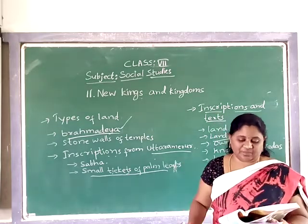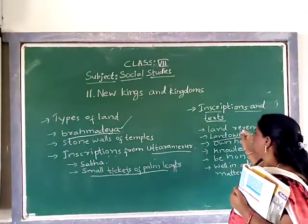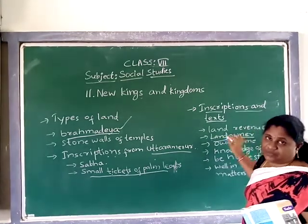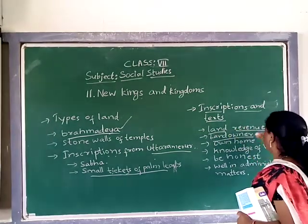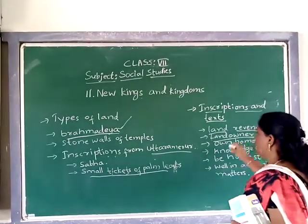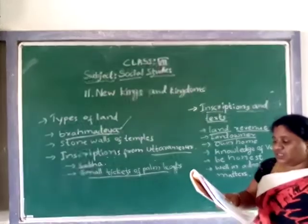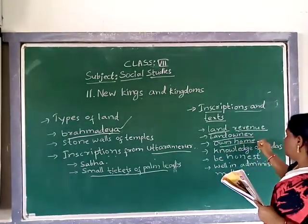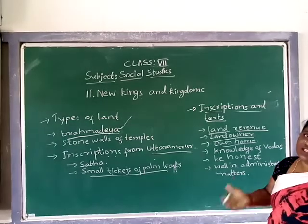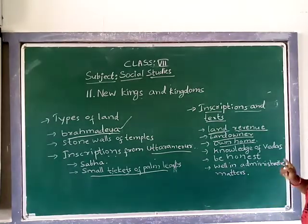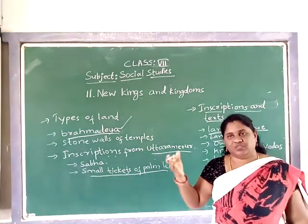Whoever wanted to be a member of the Sabha had to own some hectares of land and pay taxes and revenue on it. They should also have their own houses. Sabha members should have knowledge of the Vedas, because if any case came to the Sabha it needed to be solved based on prior historic and Vedic knowledge.